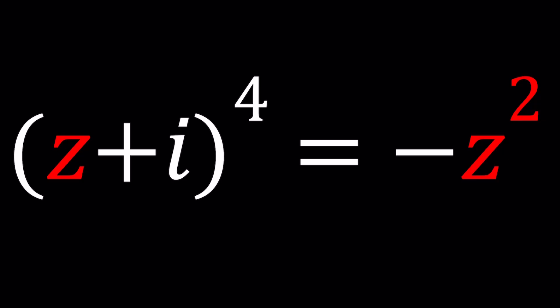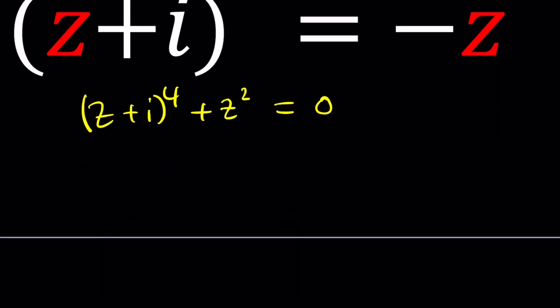We have Z plus I to the fourth power equals negative Z squared or the opposite of Z squared. Obviously, we could write this equation as Z plus I to the fourth power plus Z squared equals zero. And then this would be kind of like a sum of two squares. I don't know if that's going to help. But we're going to be looking at the quartic first, obviously.